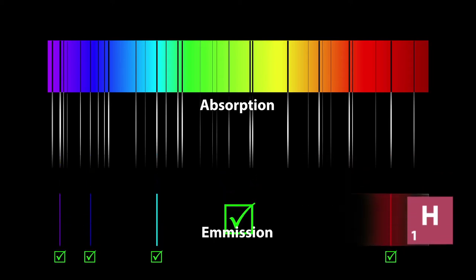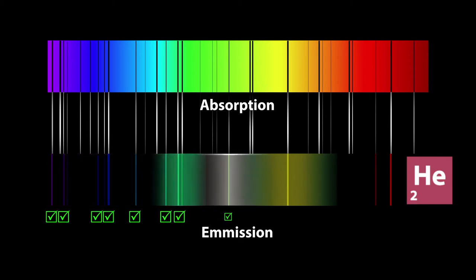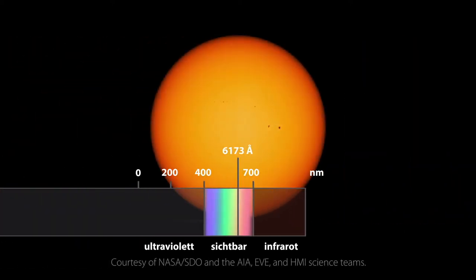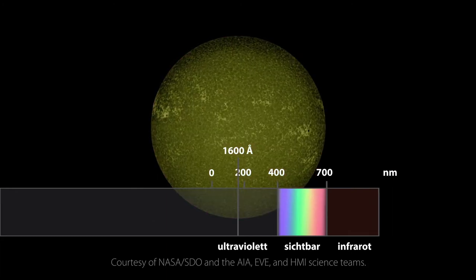This is how the element helium was discovered on the Sun's surface at the end of the 19th century. Nowadays, we can observe the sunlight in different wavelengths, or spectral ranges, directly from outer space.